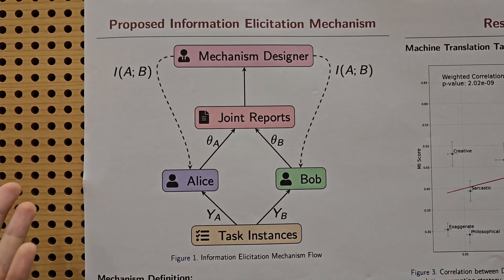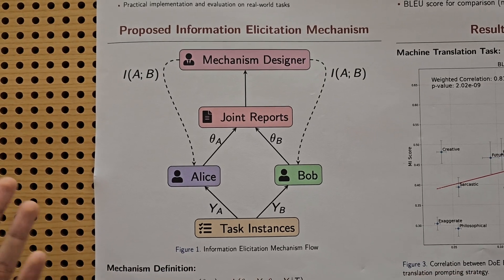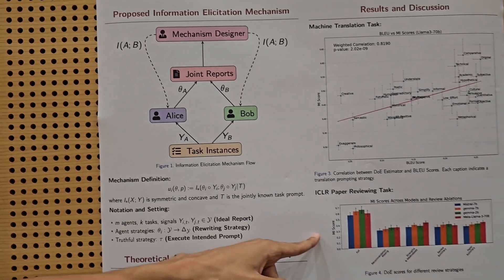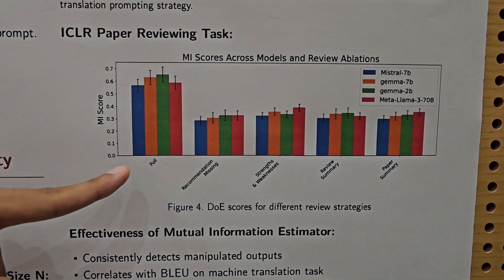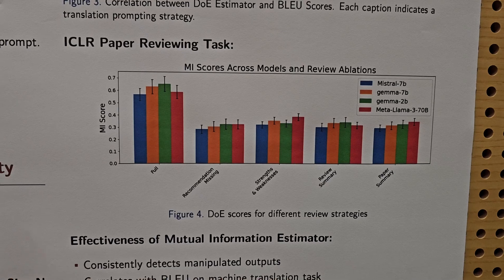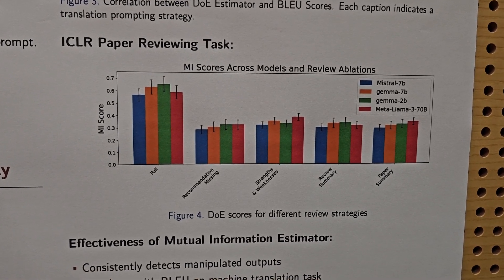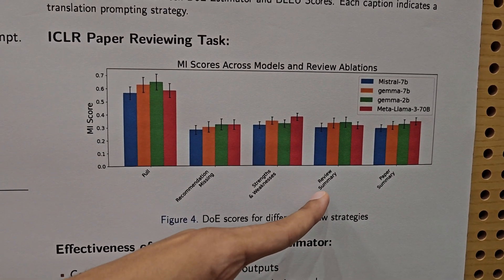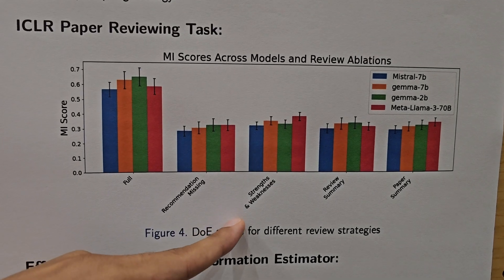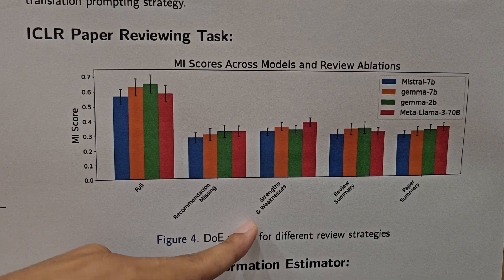We run an experiment where we confirm that our mechanism is able to detect differences in reviewer quality. In our experiment we simulate lazy reviewing where perhaps a reviewer doesn't complete all of the parts of a review. For example, maybe they only do the review summary or maybe they only cover one part like strengths and weaknesses of the paper. We score using our mechanism.